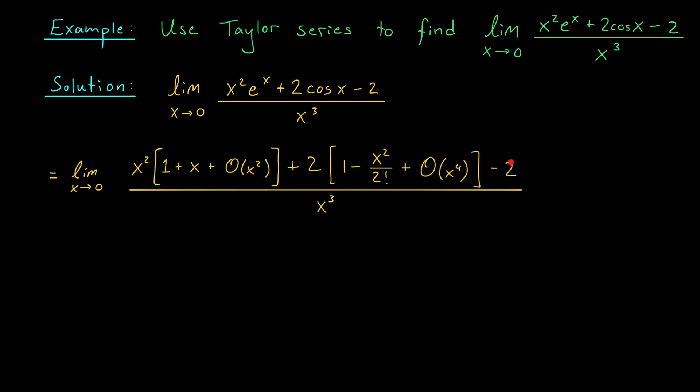Let's now expand out the numerator, and hopefully we'll get some cancellation. From my e to the x term, I get x squared plus x cubed, and when I multiply x squared by big O of x squared, that's going to give me big O of x to the four. From my cosine term, I get two minus x squared, and again big O of x to the four. I have my second minus two, and I divide by x cubed. It looks like I'm going to get some simplification here. This is probably a good sign. I have an x squared term that will cancel with this x squared. I have a plus two that will cancel with this minus two. And I can combine these two big O of x to the fours into a single big O term. I'm left with the limit as x goes to zero of x cubed plus big O of x to the four, all divided by x cubed.